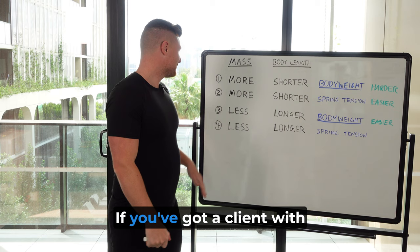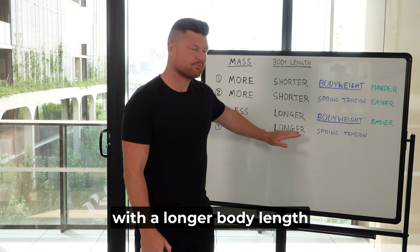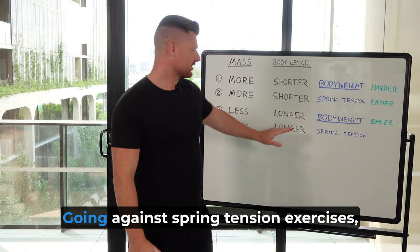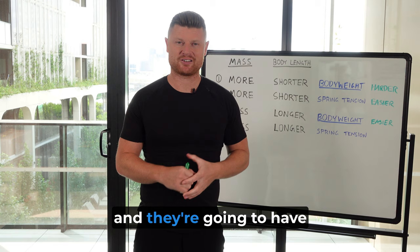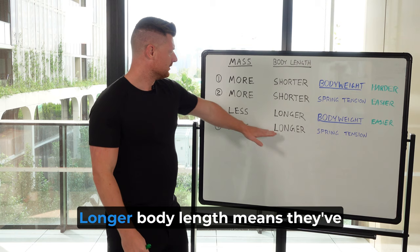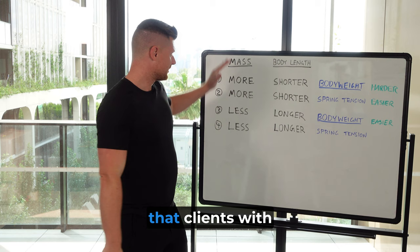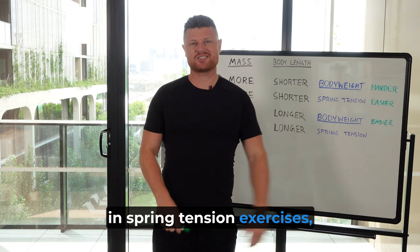Last one: a client with less body mass than average, with a longer body length than average, doing a spring tension exercise where heavier is harder. Less body mass means the springs will feel comparatively heavier — they'll have less body mass to work against the tension, so it's going to feel more challenging. Longer body length means a bigger range of motion, so they'll stretch the springs further, and the more you stretch the springs, the more resistance you get, so it's going to be harder. We can predict that clients with less body mass than average and a longer body length will find spring tension exercises comparatively harder than the average.